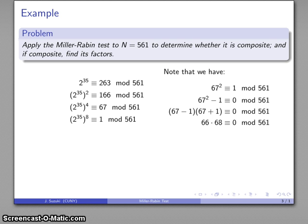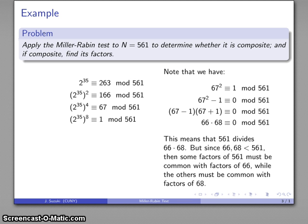Because the product is congruent to 0 mod 561, I know that 561 divides the product 66 times 68. However, 66 and 68 are both less than 561. So that means that some of the factors of 561 have to be in 66, and the rest of them have to be in 68.